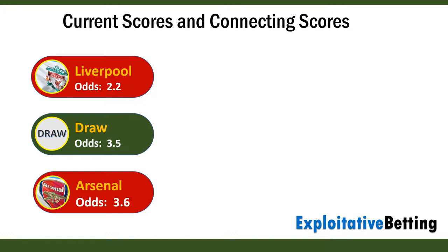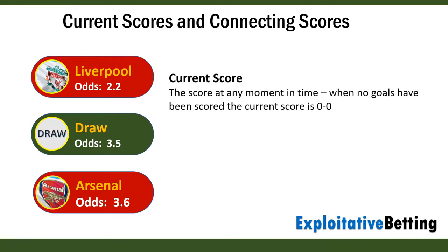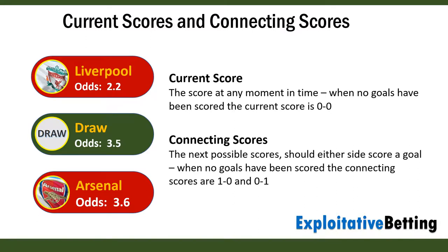In this video I'll use the phrases current scores and connecting scores to refer to the following. The current score is the score at any moment in time, so when no goals are scored the current score is 0-0. The connecting scores are the next possible scores should either side score a goal, so when no goals have been scored, the connecting scores are 1-0 and 0-1.